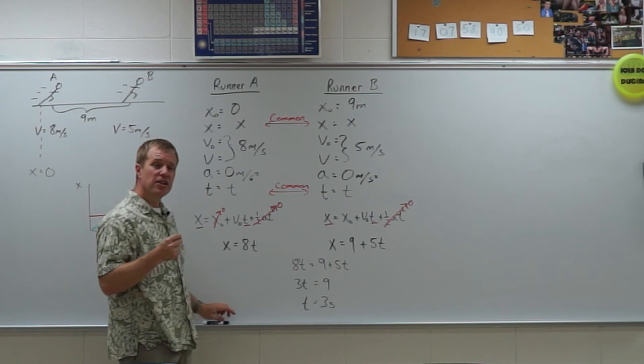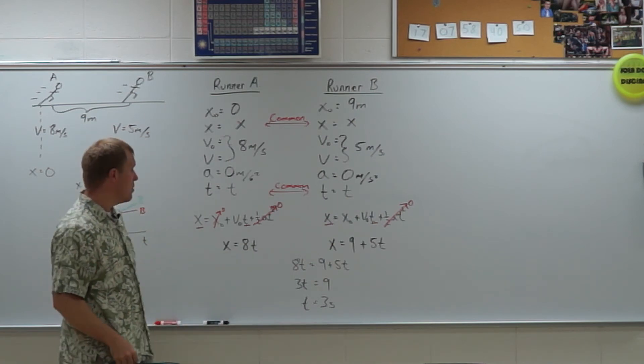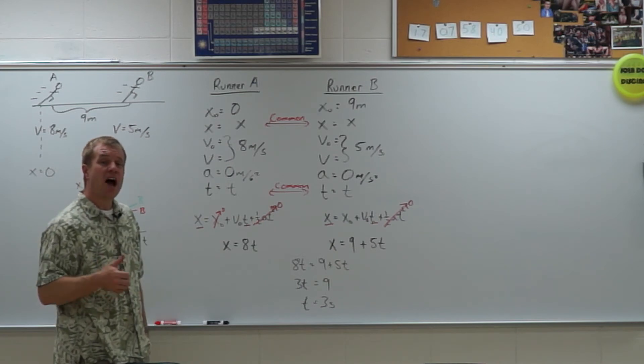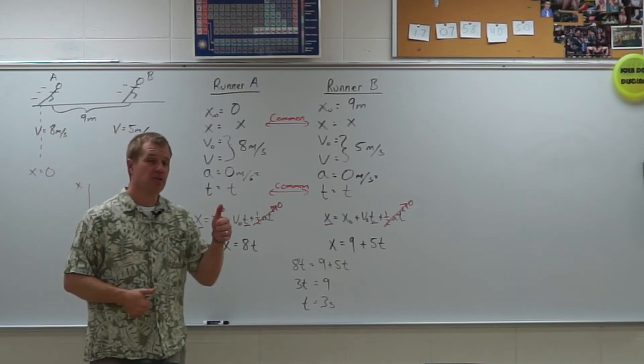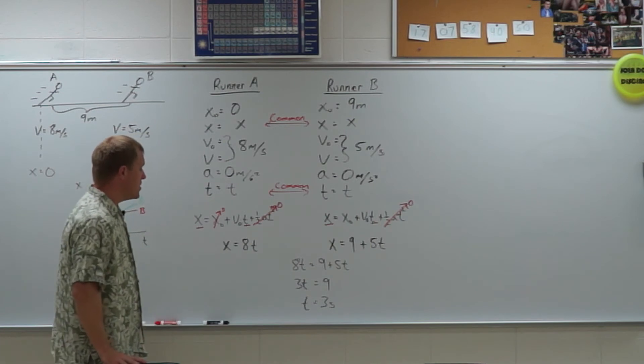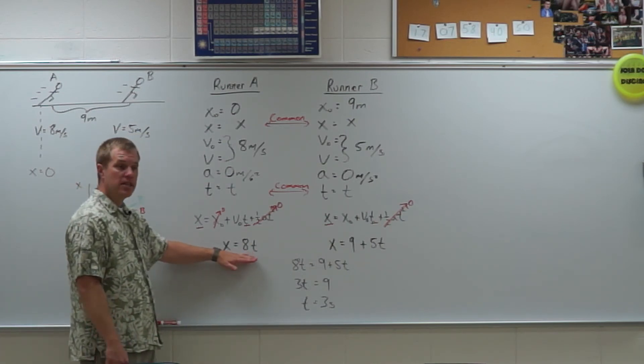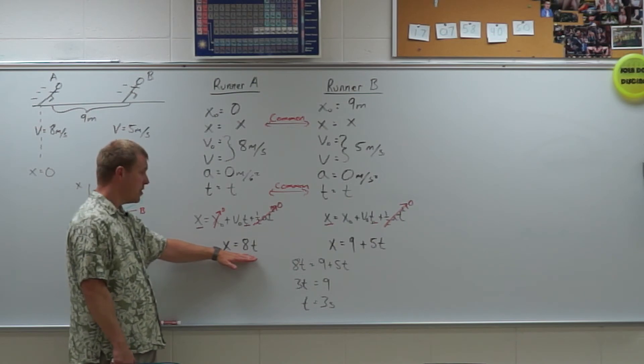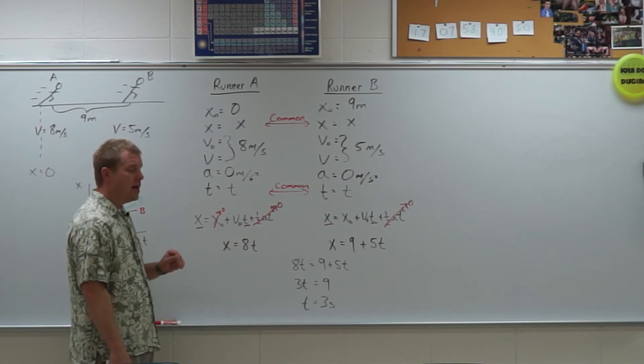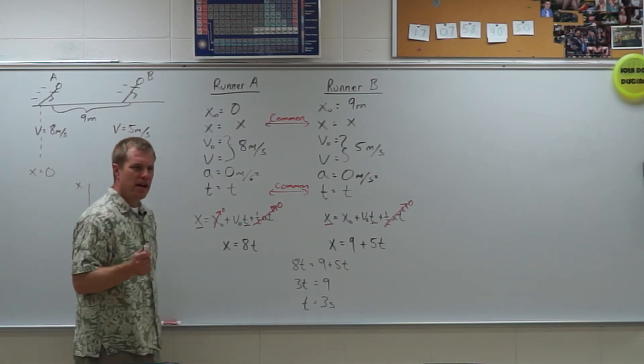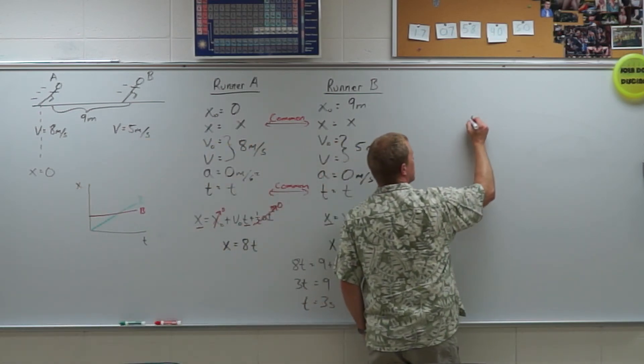Now this question could be posed a couple of ways. I could say, how long does it take to catch runner B? Or I could say, how far does runner A run and how far does runner B run? So if I want to find out how far runner A runs, I use the position of runner A. Now, how far runner B runs. Now, remember, how far is kind of a displacement idea.